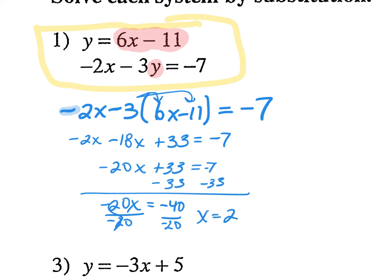Guys, it's easy to forget that negative sign with the 20 and say negative 40 divided by 20 is negative 2 — watch out for that. Then you plug back in and you get a y value. You always need to check your x and y value just to make sure you didn't make a silly mistake. I found that x equals 2, and now I can substitute into either equation to find y.